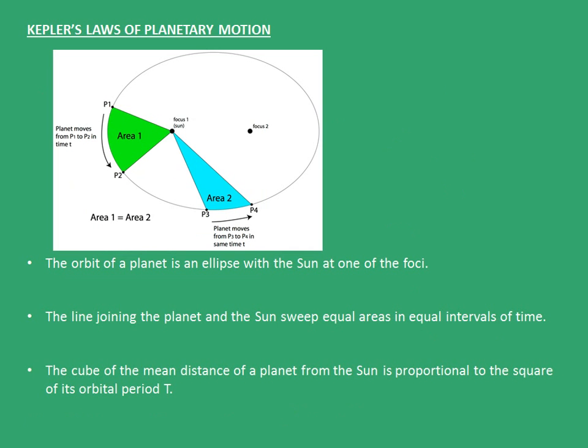Now, we move on to the next section that is Kepler's laws of planetary motion. Kepler gave a set of three laws which were very important considering planetary motion. These laws were: the orbit of planet is an ellipse with sun at one of the foci. So, in this picture, this is the sun here at one of the foci. The second law says that the line joining the planet and the sun sweep equal areas in equal intervals of time.